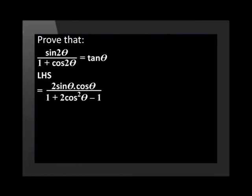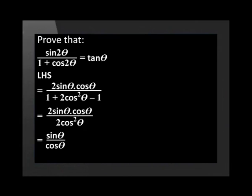Using our identities, the left-hand side is equal to 2 multiplied by sin theta times cos theta over 1 plus 2 cos squared theta minus 1. We simplify this to get 2 sin theta times cos theta over 2 cos squared theta. Now we can cancel common factors in the numerator and denominator, giving us sin theta over cos theta, which is equal to tan theta. Therefore, the left-hand side equals the right-hand side.